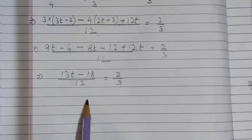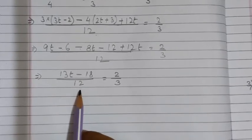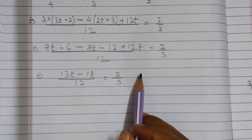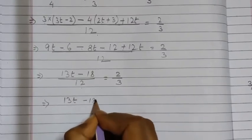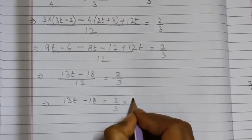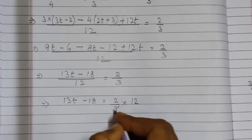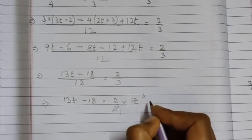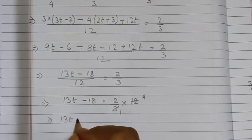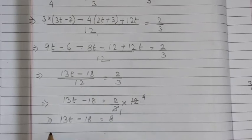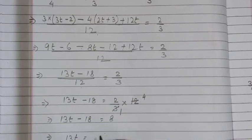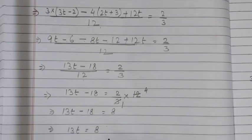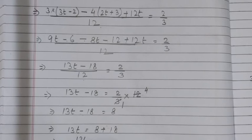The 12 in the denominator shifts to the other side as 12 in the numerator. So we have 13t minus 18 equal to 2 by 3 into 12. Reducing — 3 ones are 3 and 3 fours are 12 — we get 13t minus 18 equal to 8. We move 18 to the other side, so 13t equals 8 plus 18, which is 26.